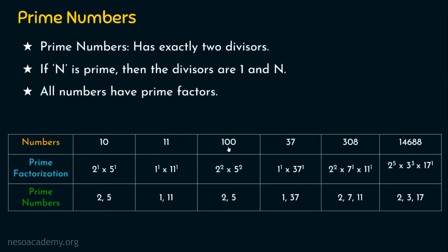Let's take the number 100. It can be written as 2 power 2 × 5 power 2. We can also write 100 as 10 × 10, and since 10 can be written as 2 × 5, ultimately we get prime factors at the end. So 100 can be written as 4 × 25, but the prime factors involved are 2 and 5. Is 100 a prime number? No, definitely it is not.